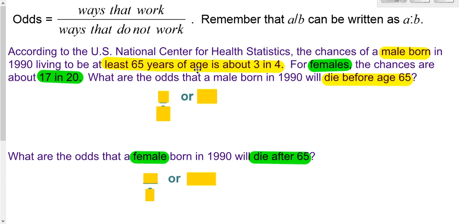Odds is typically written as a fraction or with a colon in between. So let's go ahead and try to figure out the odds that a male is born in 1990 will die before the age of 65. So take a moment, read through this maybe twice, and then we'll deal with it.